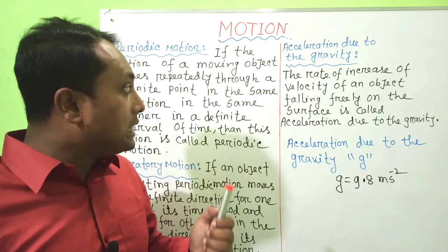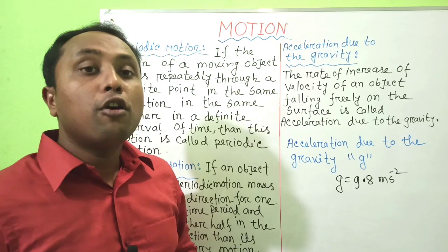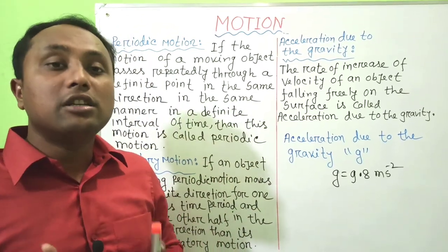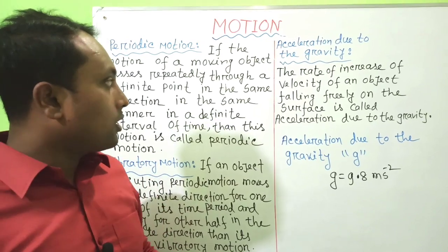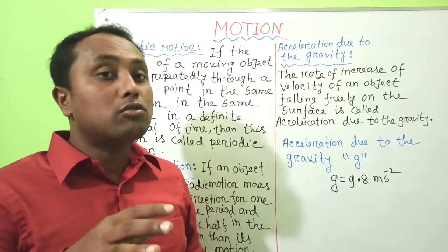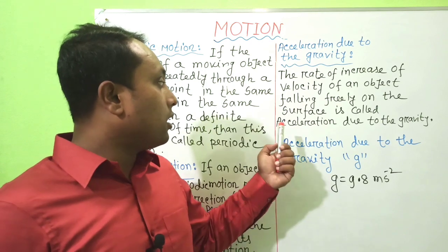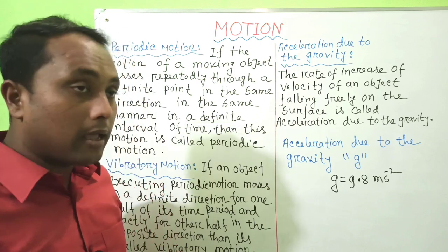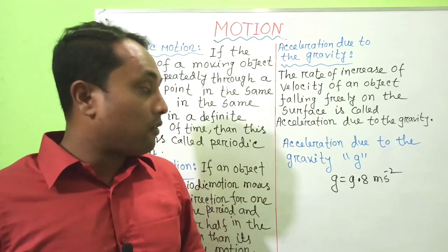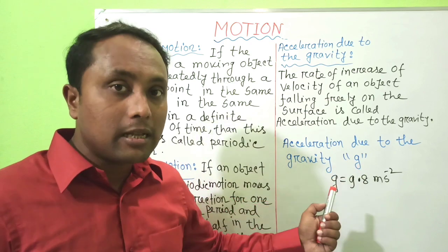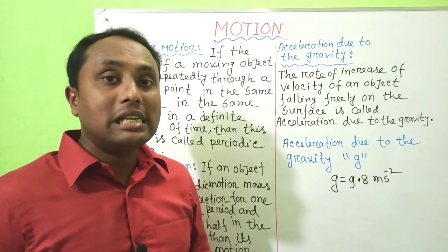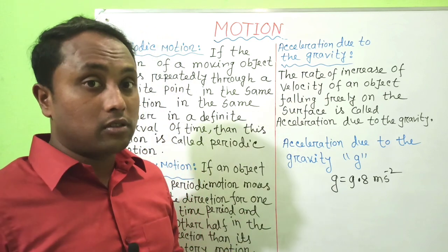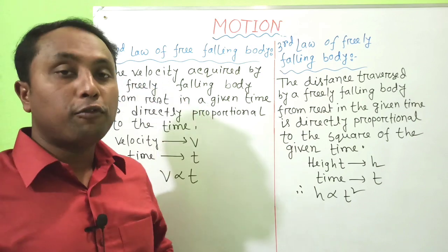The next definition is Acceleration Due to Gravity. The rate of increase of velocity of an object falling freely to the surface is called acceleration due to gravity. It is denoted by small 'g', and the value of g is 9.8 ms⁻² at the surface.